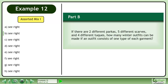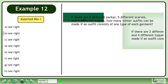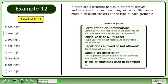Now we'll move on to Part B. If there are two different parkas, five different scarves, and four different toques, how many winter outfits can be made if an outfit consists of one type of each garment? Pause the video and organize the information about this question.